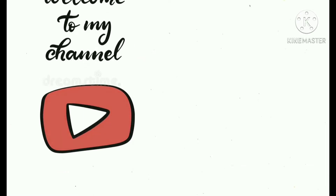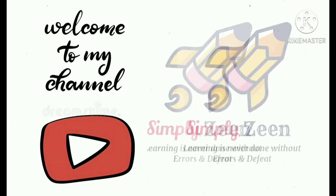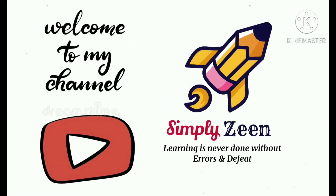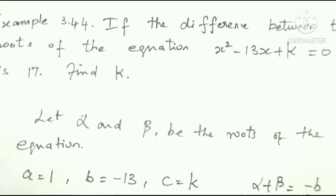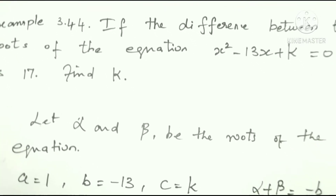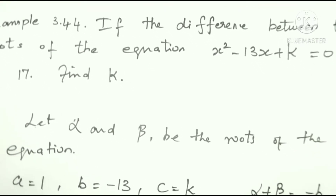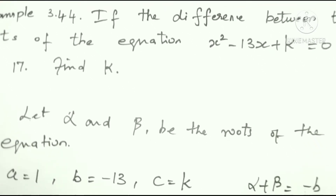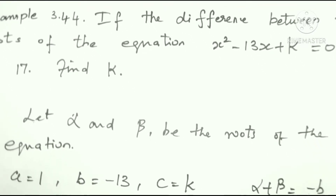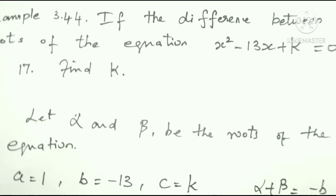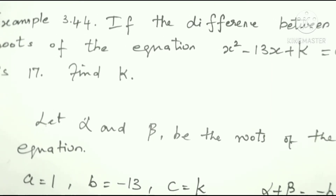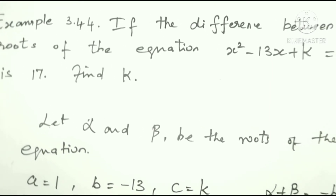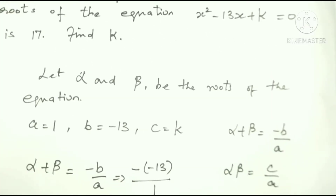Hello friends, welcome to my channel SimpliZee, it's me Zarin. Example 3.44: if the difference between the roots of the equation x squared minus 13x plus k equals 0 is 17, find k.